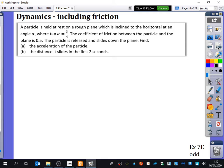There's a couple of things I'm going to point out. So it says a particle is held at rest on a rough plane which is inclined to the horizontal at an angle alpha, where tan alpha is three quarters. The coefficient of friction between the particle and the plane is 0.5. The particle is released and slides down the plane. Find the acceleration of the particle and the distance it slides in the first two seconds.